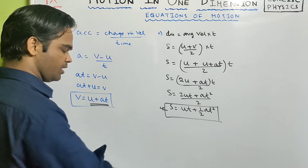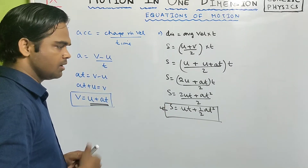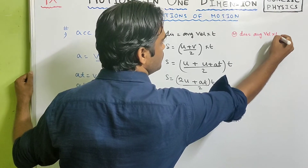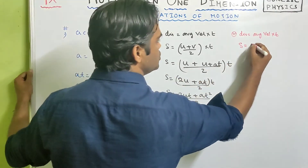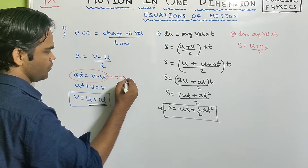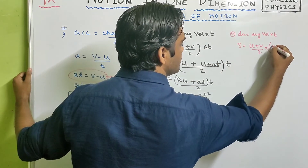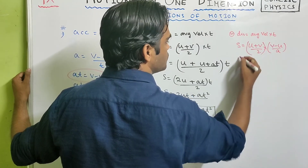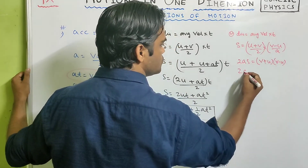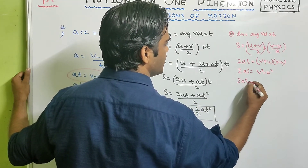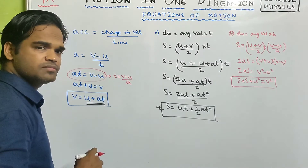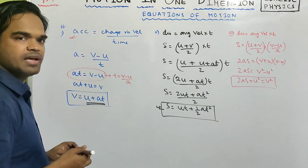For the third equation, v squared equals u squared plus 2as: distance equals average velocity times time, so s equals (u plus v) divided by 2, times t. From the first equation, t equals (v minus u) divided by a. Substituting gives 2as equals (v plus u)(v minus u) equals v squared minus u squared, so v squared equals u squared plus 2as.